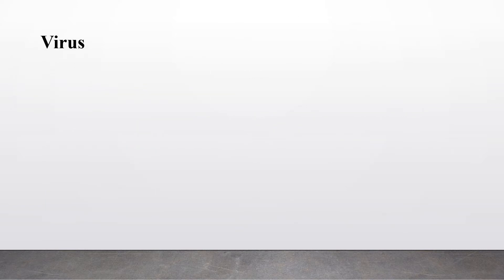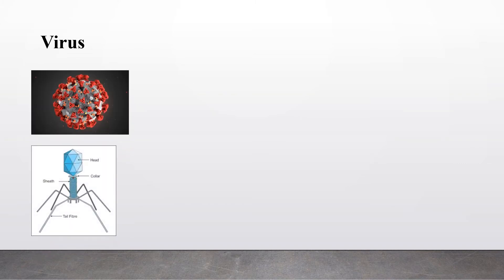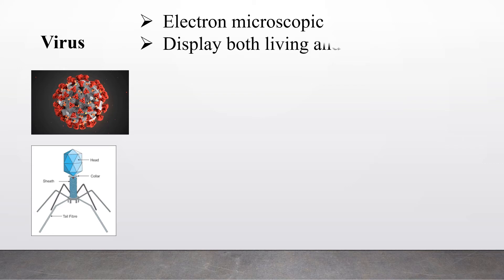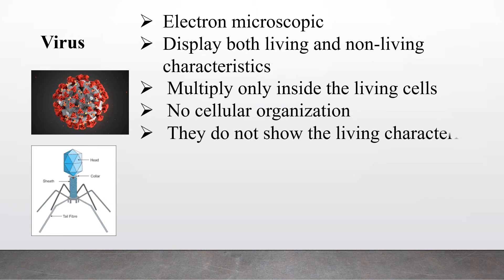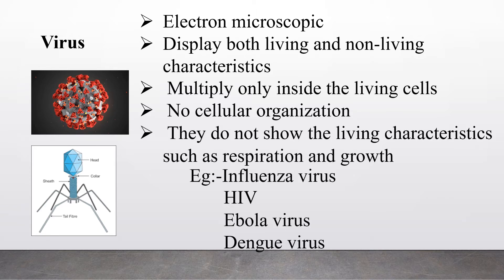The next microorganism type is virus. Viruses cannot be observed by a light microscope; we have to use an electron microscope to see them. Viruses display both living and non-living characteristics. A non-living characteristic is that they can multiply only inside living cells, they have no cellular organization, and they do not show characteristics such as respiration and growth. Examples are influenza virus, HIV, Ebola virus, dengue virus, and coronavirus.